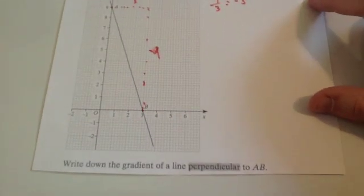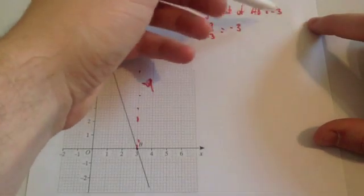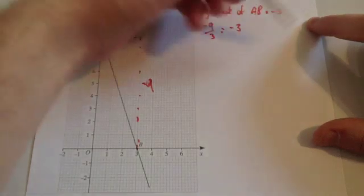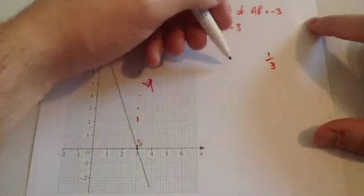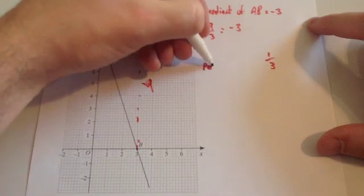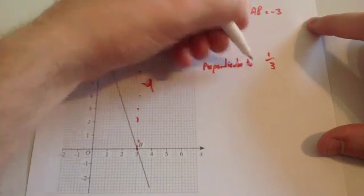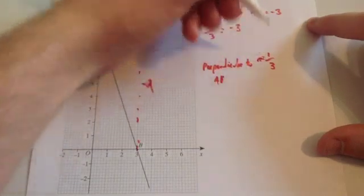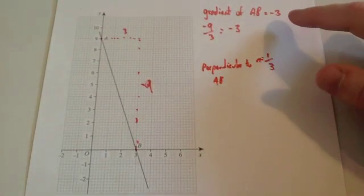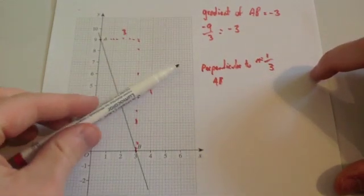Now I want to find the gradient of a line that is perpendicular to AB — that's the negative reciprocal. We change the sign from negative to positive, and we take the reciprocal of three, which is one third. So the perpendicular gradient is equal to a third. In other words, you go across three, up one.